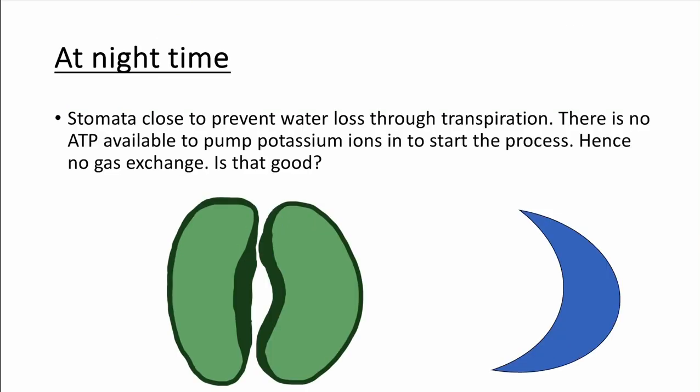Now, at night time, stomata close. That is for a reason. It is to prevent water loss through transpiration. You will already have covered or will shortly be covering xylem and water transport movement. So the osmotic pressure in the roots upwards. You've got in the xylem, you've got adhesion and cohesion. You've got evaporation through the stomata in the leaves, which is called transpiration. Now, at night time, if you had the stomata open, would you be able to do photosynthesis? Not really. There's no light. So chloroplasts do not get that energy. So there's really no need to have the stomata open. It would just be a water loss. However, that also means there is, with closed stomata, no gas exchange. Is that good for a plant?